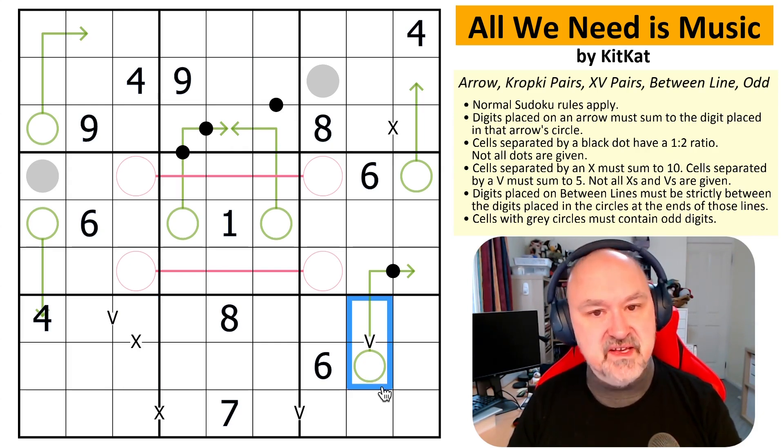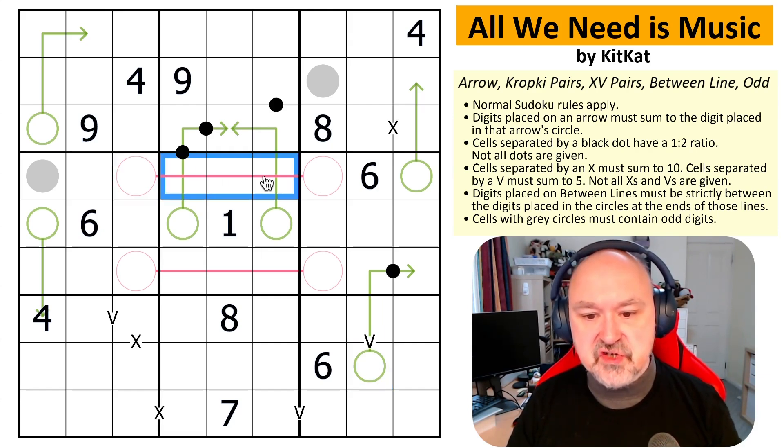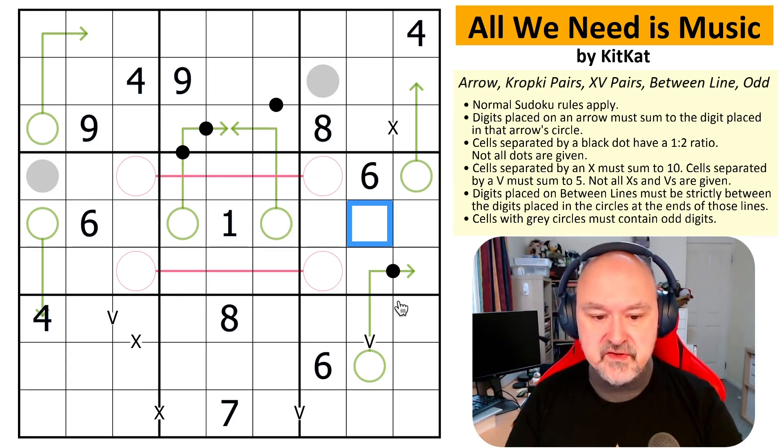Digits on these lines - these are between lines - must be strictly between the digits in the circles. So we have between lines. The last thing we have is the digits placed on these gray circles must be odd. With that, this puzzle should be solvable. Let's give it a shot.